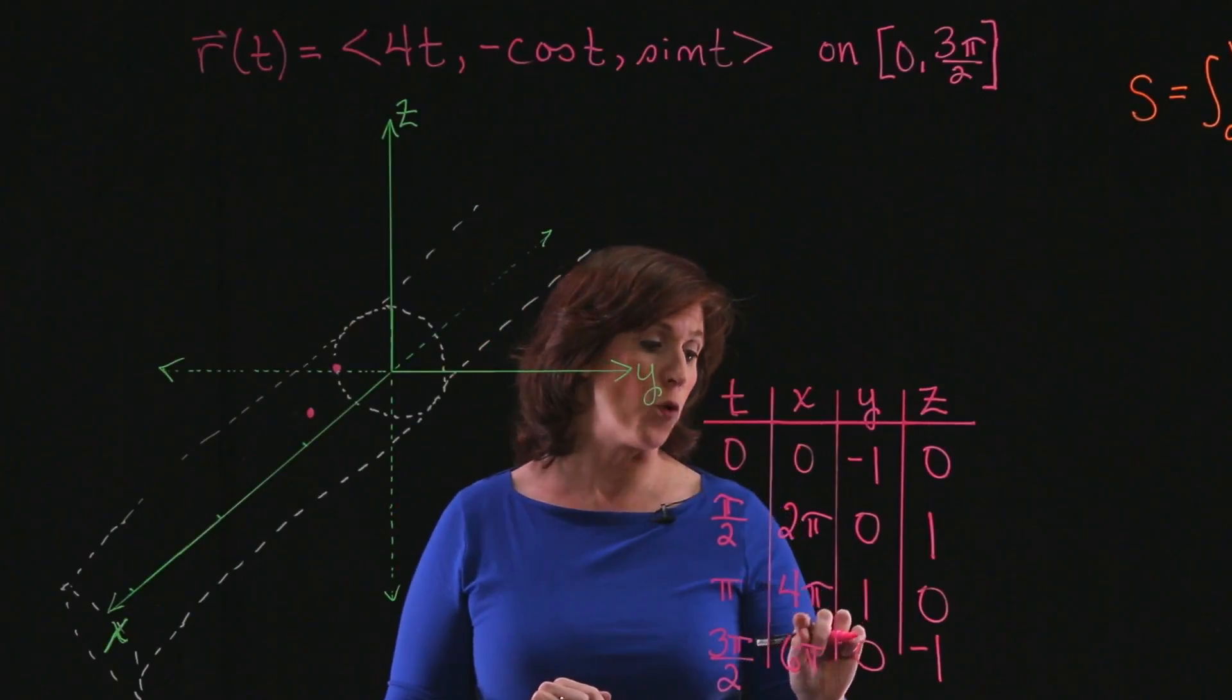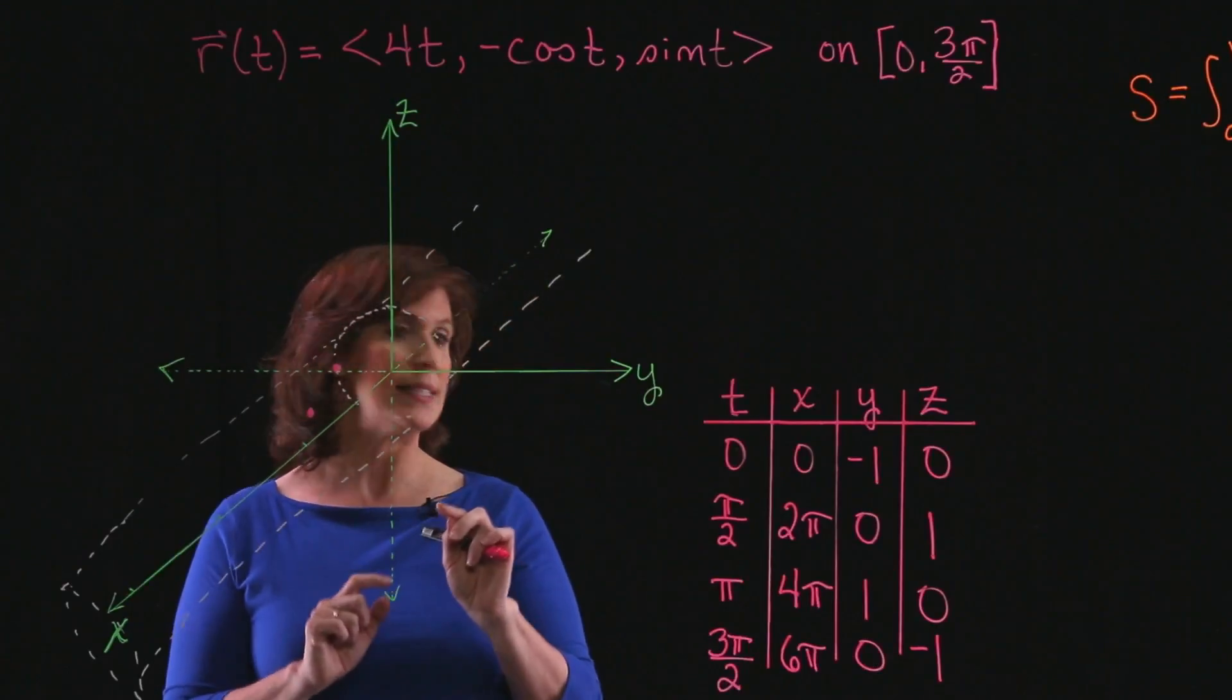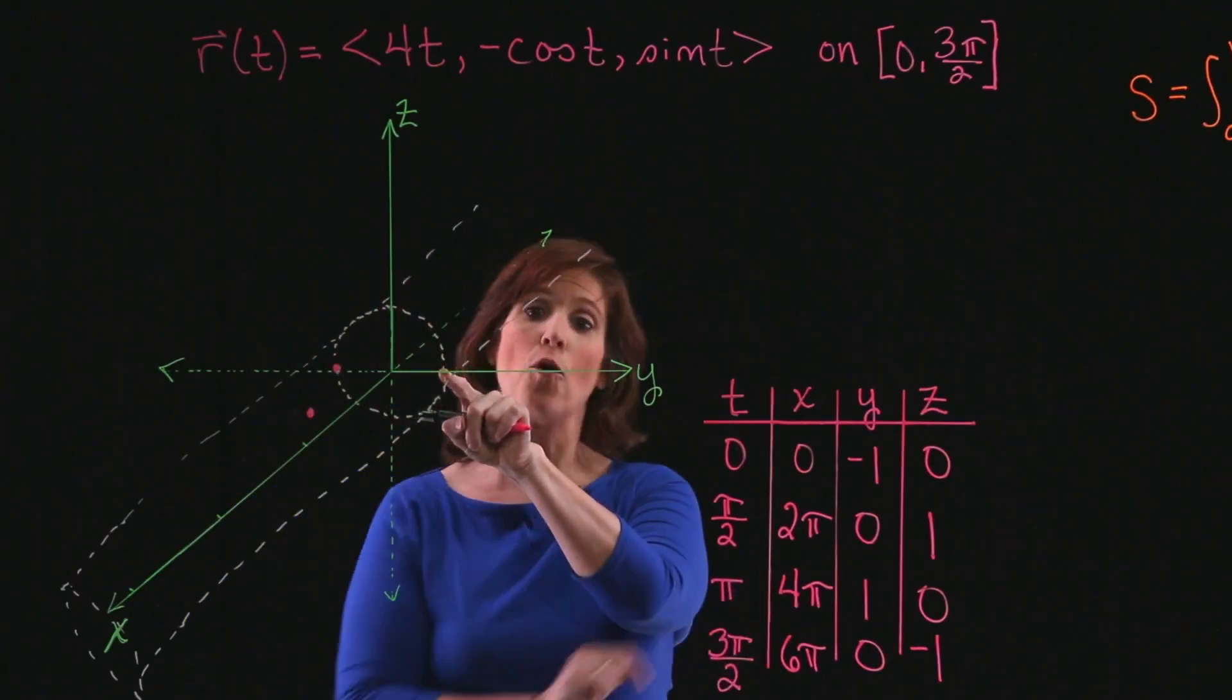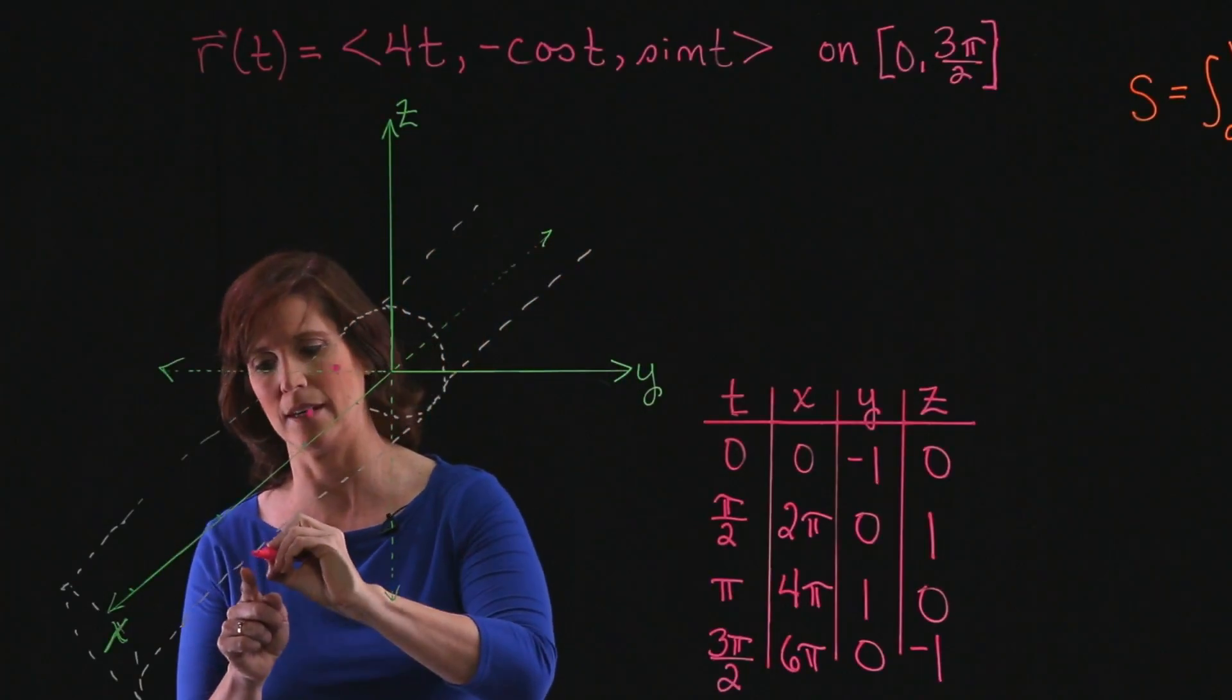The next point is (4π, 1, 0). Again, 1, 0 on the y-z-plane, that's easy to see. That's going to be this location. But I have to go out 4π on the x-axis, so that's this length. So that's going to take me right about out to here.